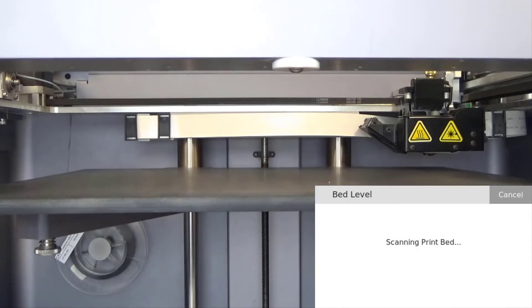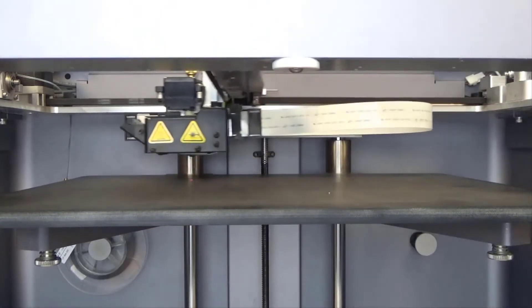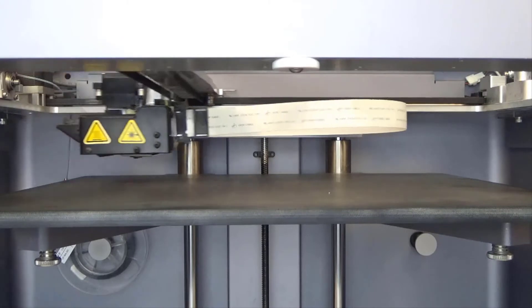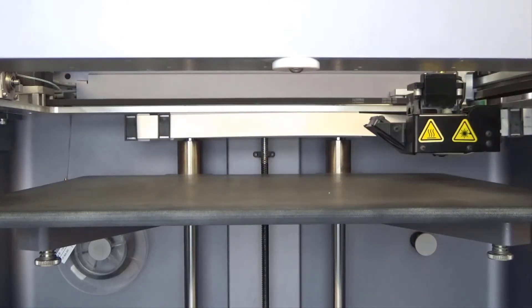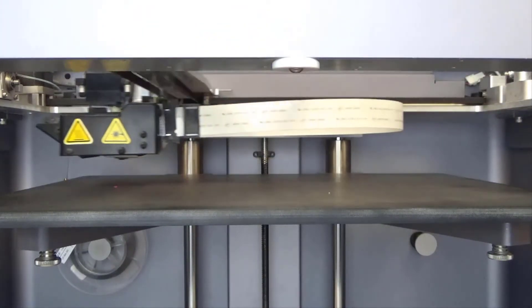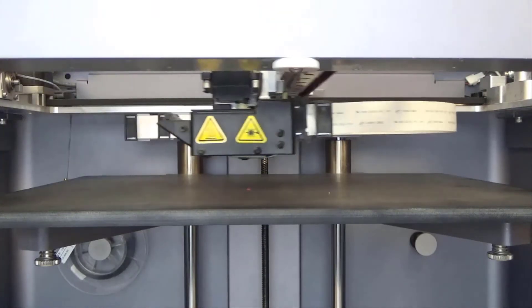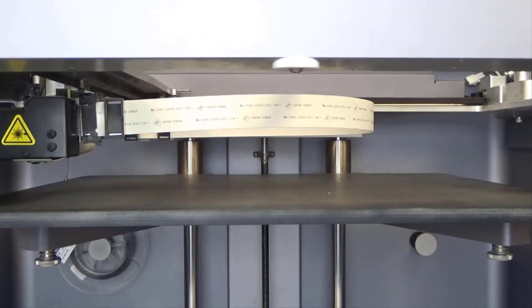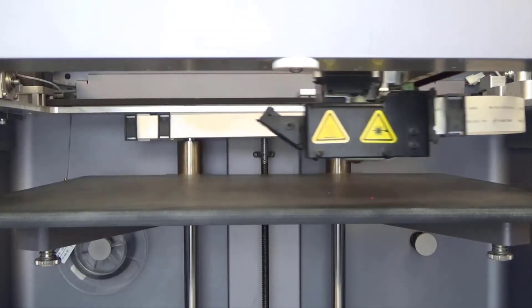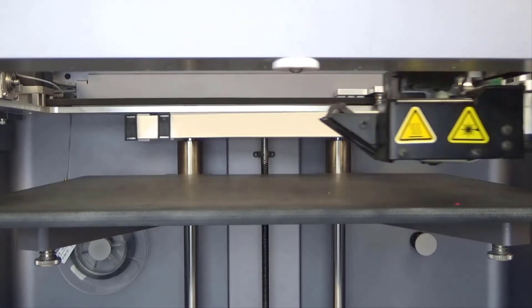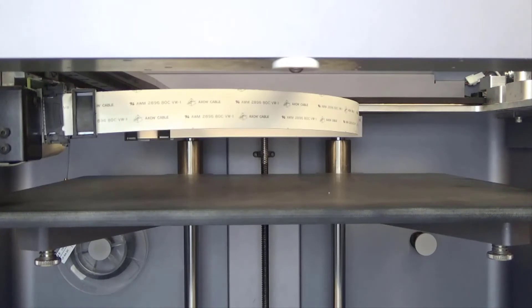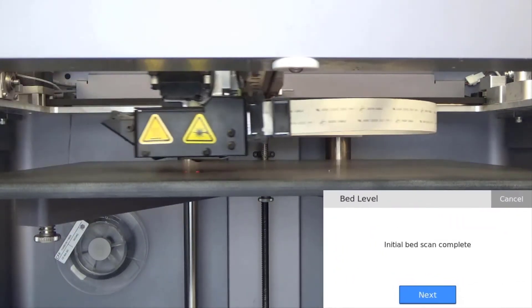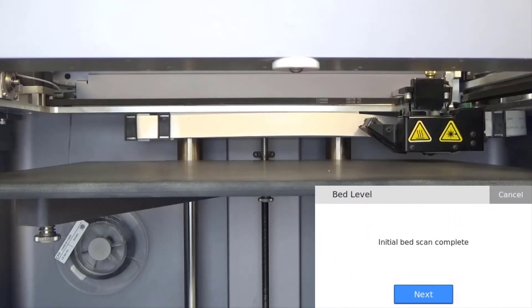The utility will start with the initial scan of the print bed. If the print bed is either very high or very low, which is sometimes caused by switching beds, the printer may not be able to automatically compensate for the large offset. In that case, the screen will display an error and you will be asked to start the laser leveling process over with the thumbscrews loosened all the way. You may also need to adjust the Z offset in that case.